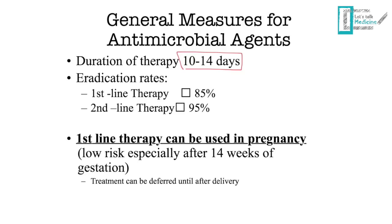The eradication rate for first-line triple therapy is approximately 85%, reduced due to increasing clarithromycin resistance. Second-line quadruple therapy achieves approximately 95% eradication. Triple therapy can be used in pregnancy, as it has low risk, especially after 14 weeks of gestation; otherwise, treatment may be delayed until after delivery if the patient is asymptomatic.